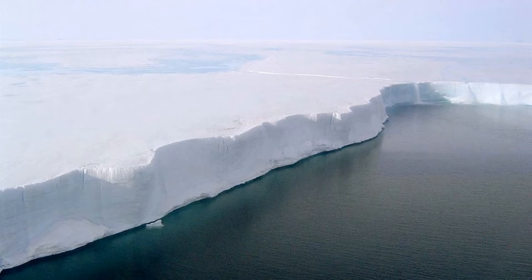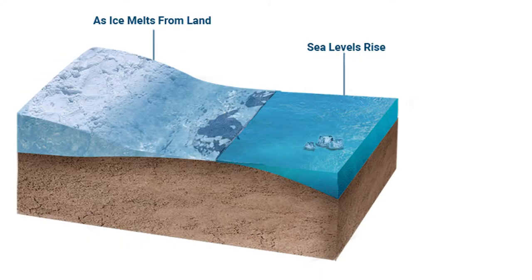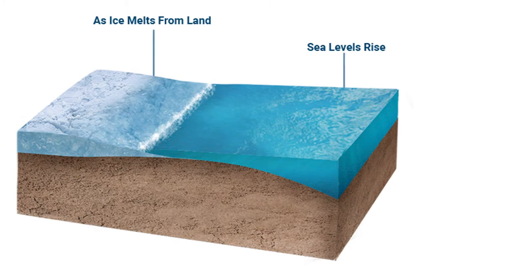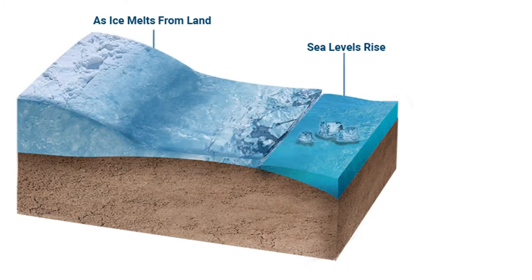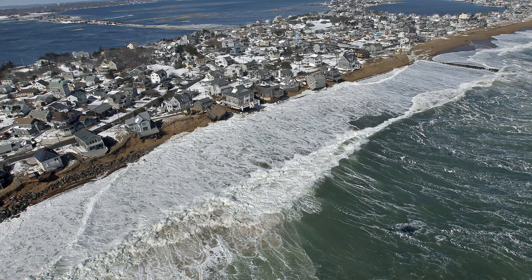Problematically, these ice sheets are slowly disappearing due to rising temperatures and climate change. The melting of these ice sheets is expected to raise sea level and cause a marine transgression, which will cause significant flooding in coastal areas and wreak havoc on populations living along coastlines.